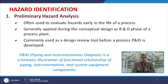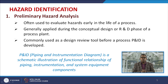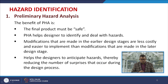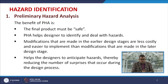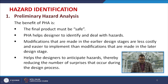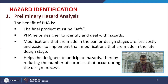PHA is commonly used as a design review tool before a process P&ID is developed. The P&ID is a schematic illustration of the functional relationship of piping, instrumentation, and system equipment components. The benefits of preliminary hazard analysis include ensuring the final product is safe. PHA helps designers identify and deal with various kinds of hazards, and modifications made in earlier design stages are less costly and easier to implement than those made later, reducing surprises during the design process.